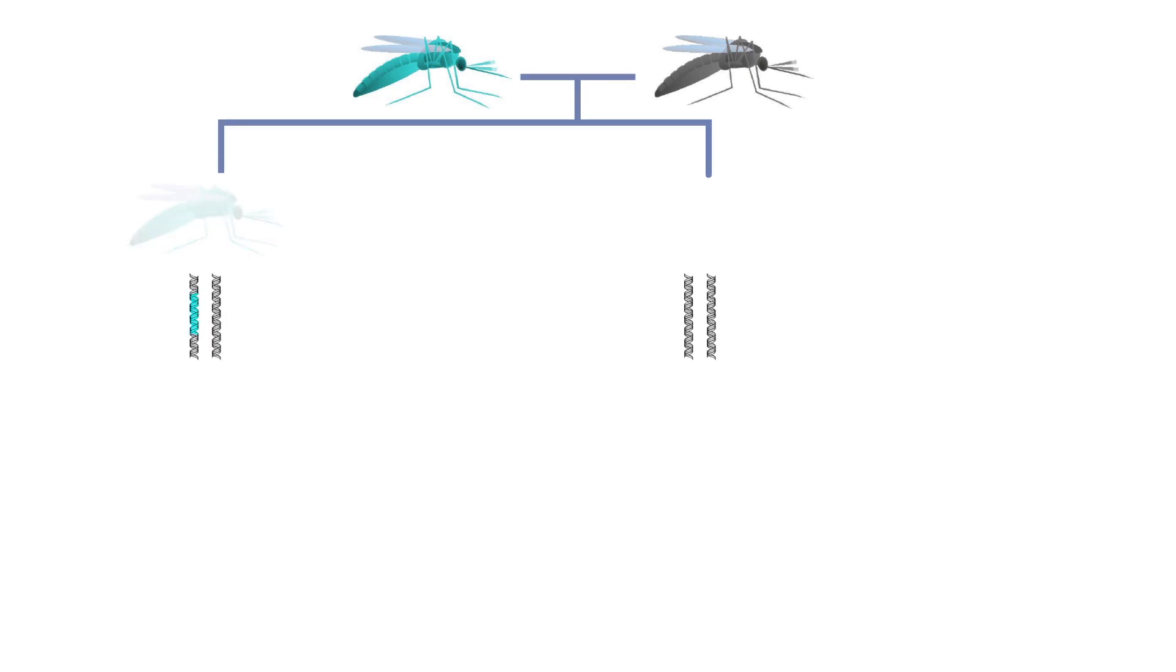Thus, only 50% of offspring will carry the altered gene, while the other half will inherit the wild type version from both parents.